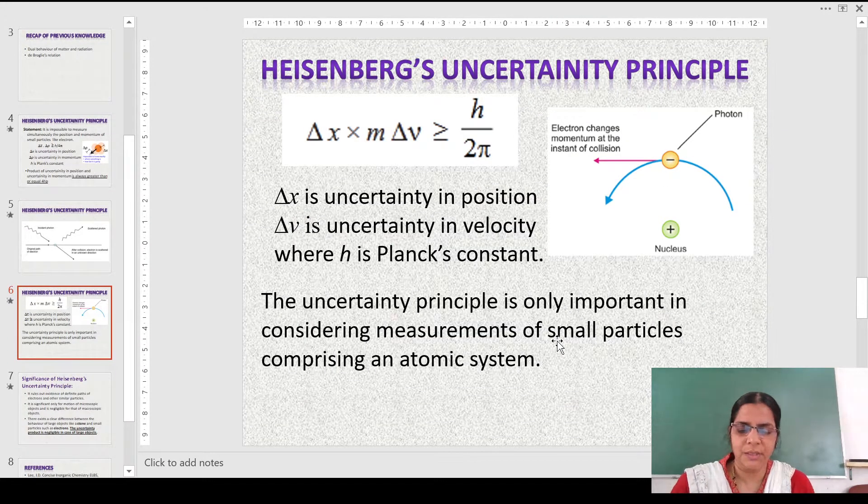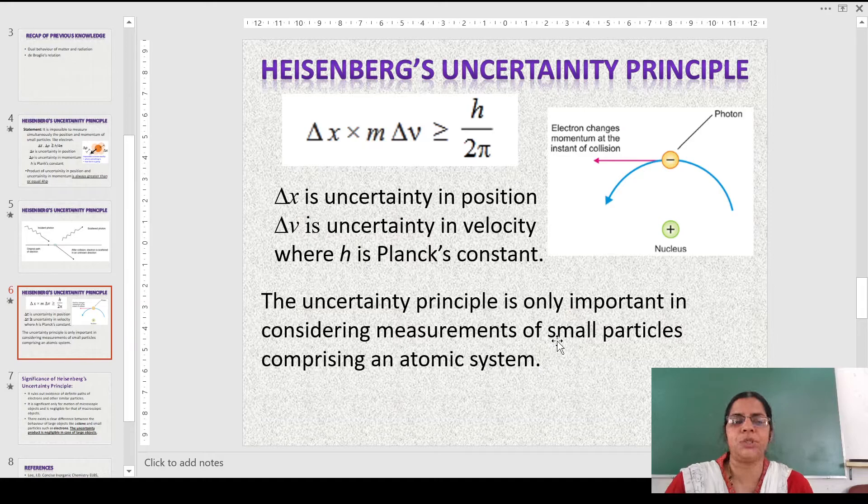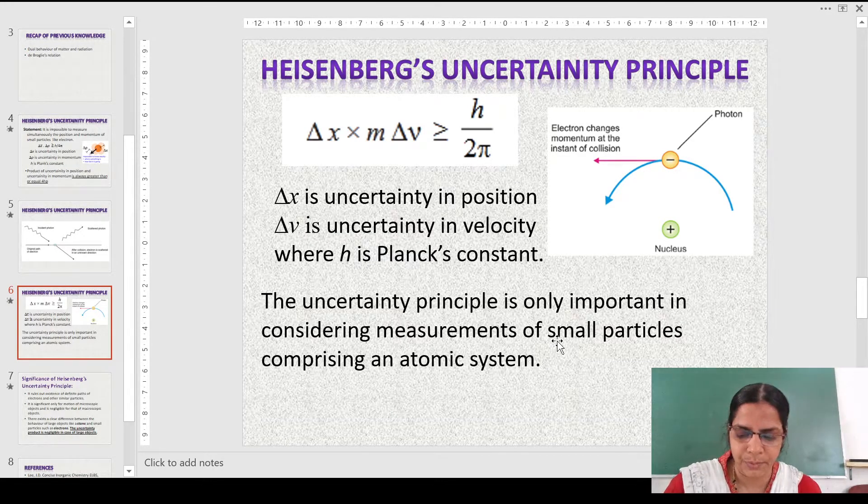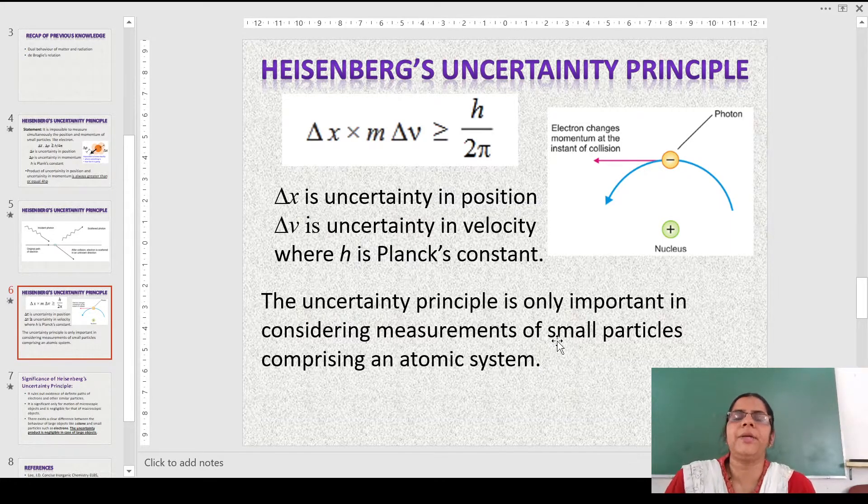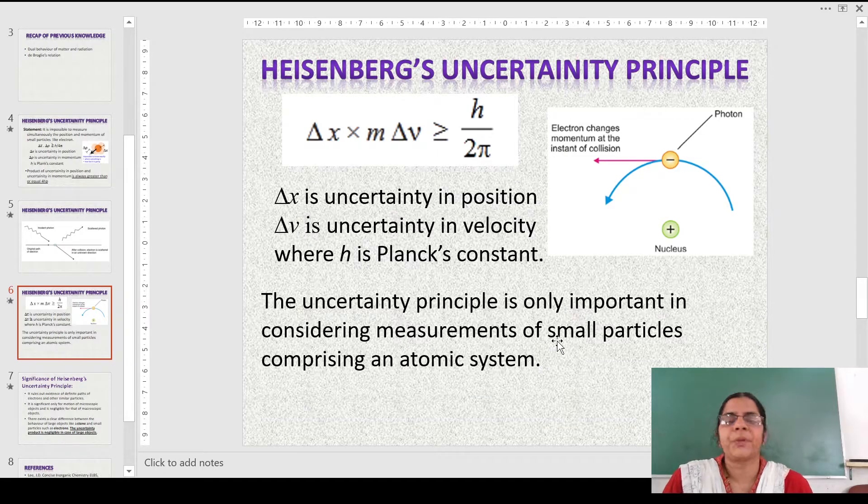But there is a clear difference between the behavior of large objects like a stone and small particles such as electrons. Now, let us imagine a stone, a huge stone which has a particular mass and is heavy. So it is quite possible to measure its momentum as well as its position easily. But for small particles like electron, it is not possible. So uncertainty is related only in case of small particles, but the product is negligible in case of large objects.